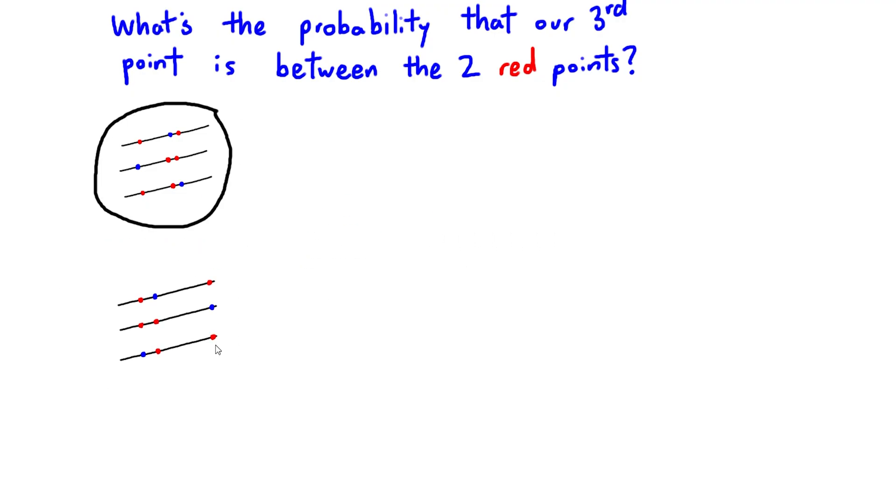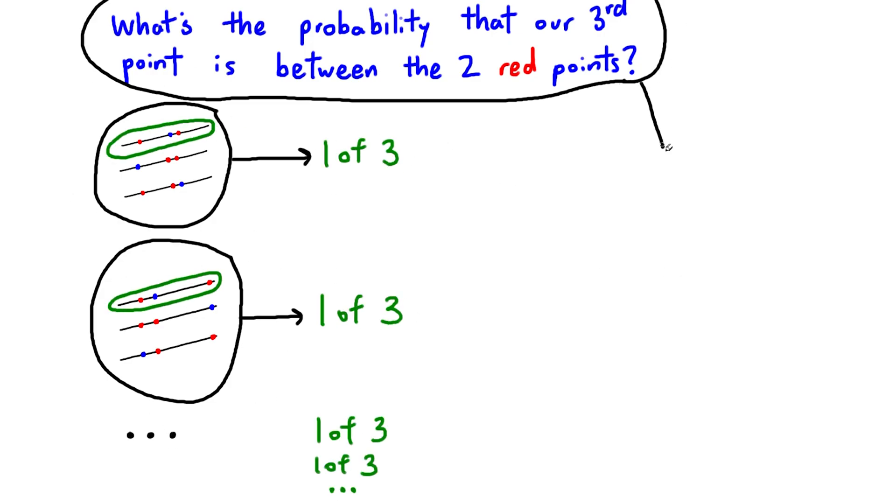This means that no matter the positions of our dots, the probability that the third point is between the two red points is always one-third. So the answer to our question is one-third.